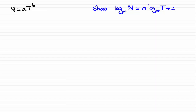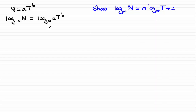For this question, we were given that n equals a times t to the power b and asked to show that we could express it in this form here. To do this, we need to take logs to both sides — we can see that logs are being used on both sides. So take logs to base 10 to both sides and you should find that you've got something like this.